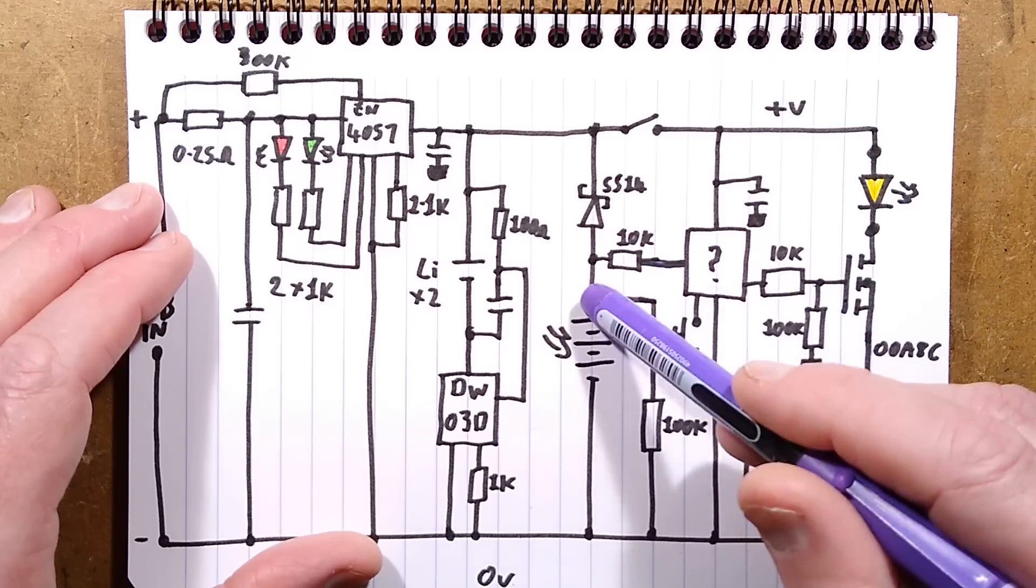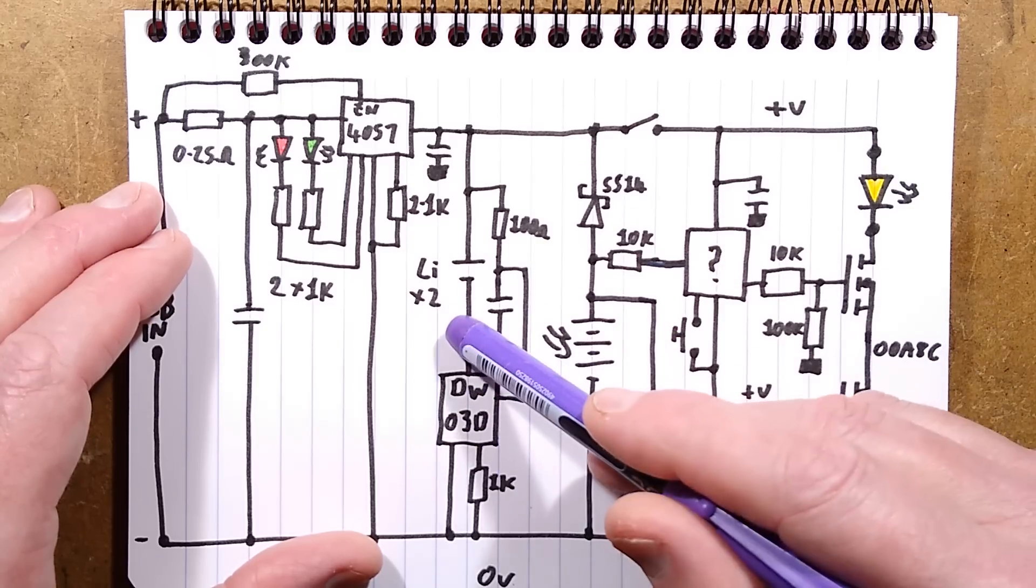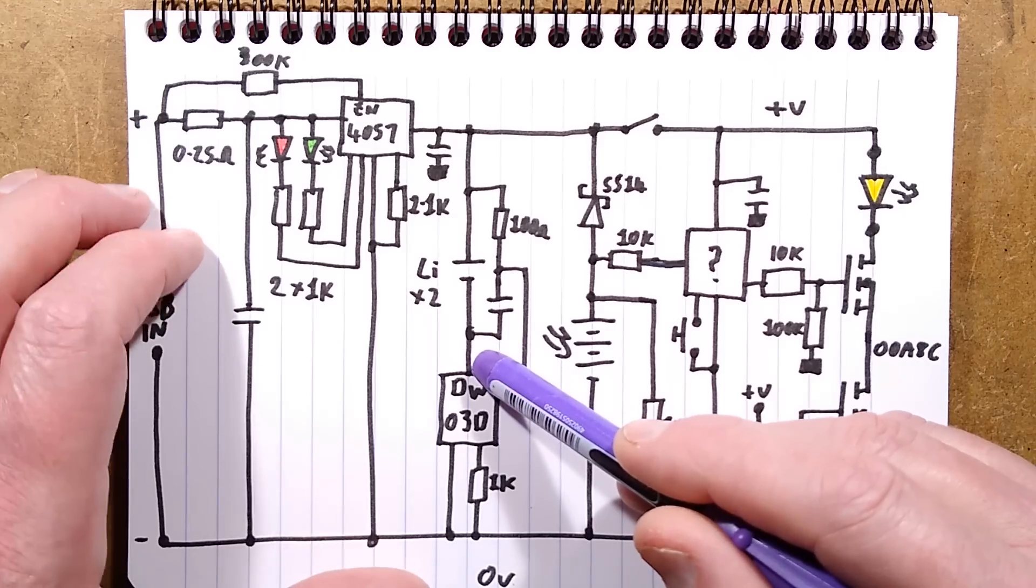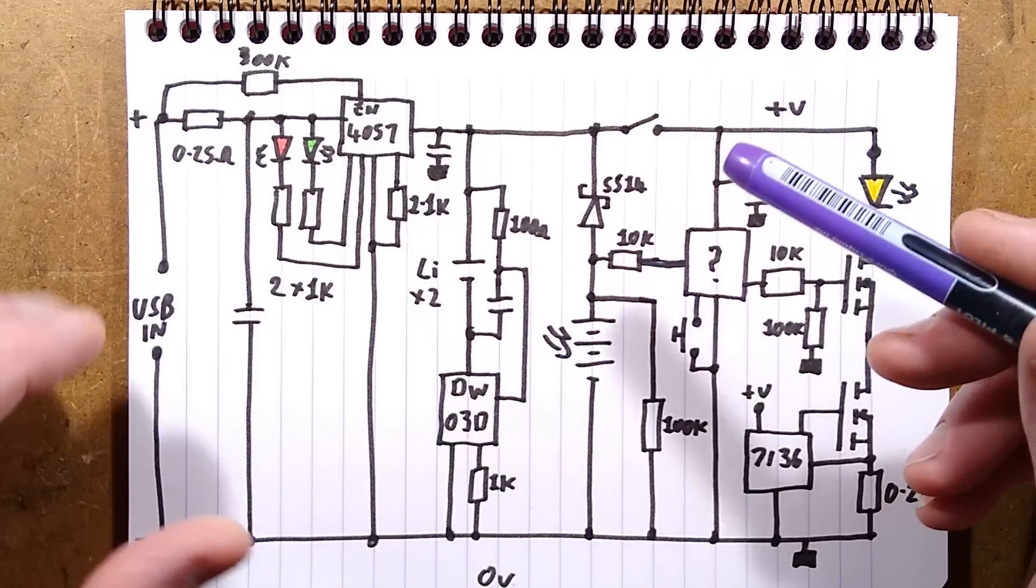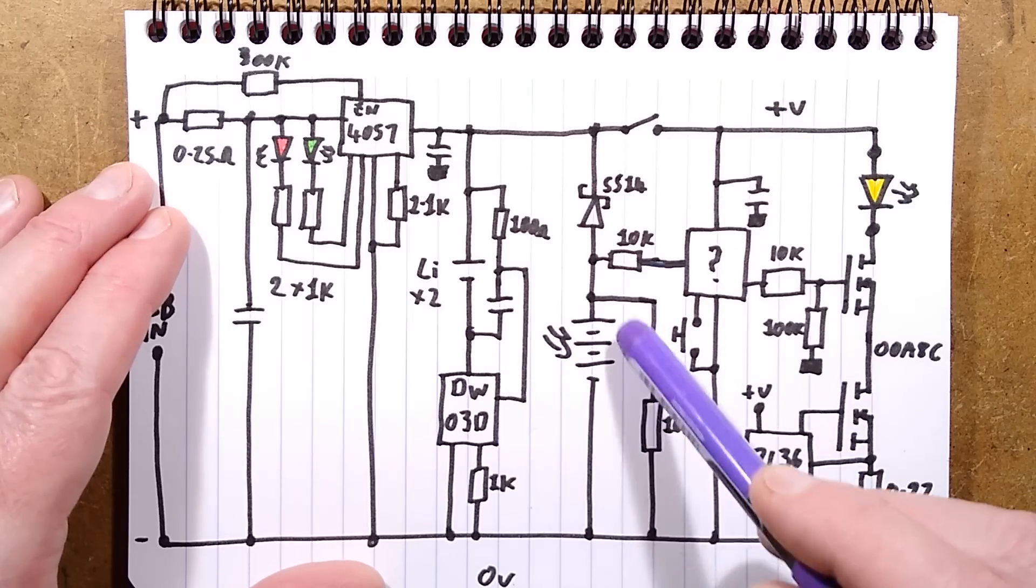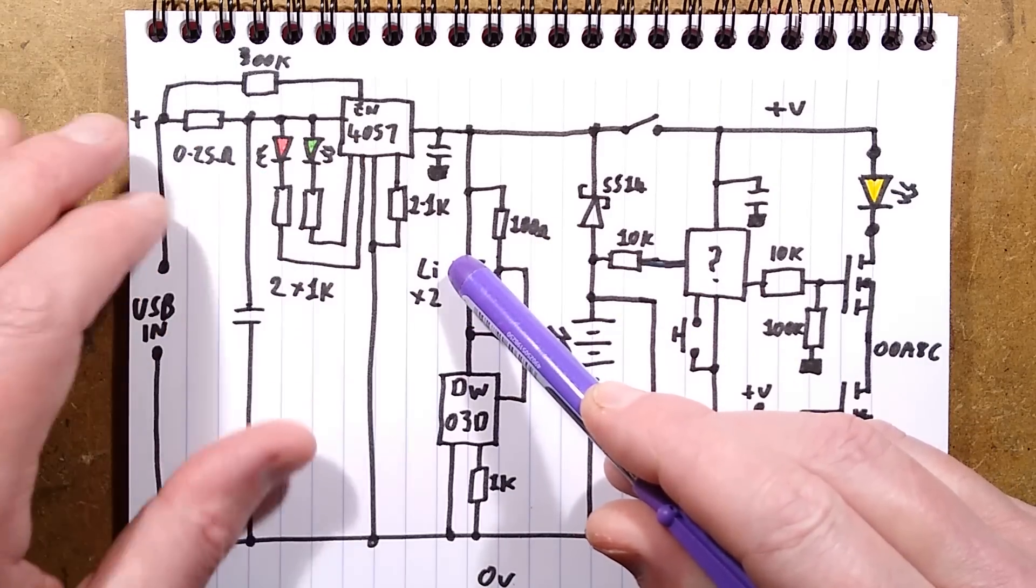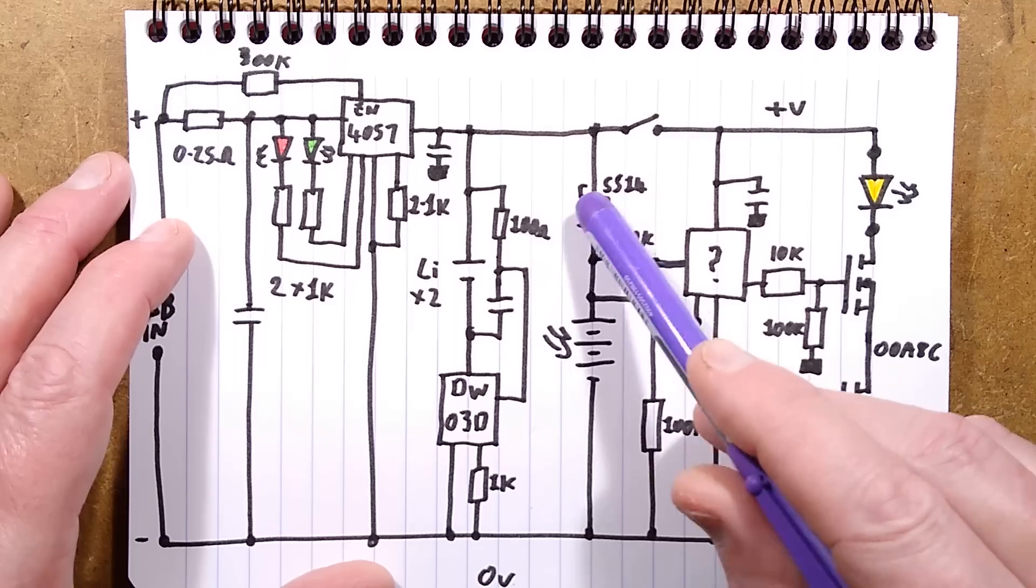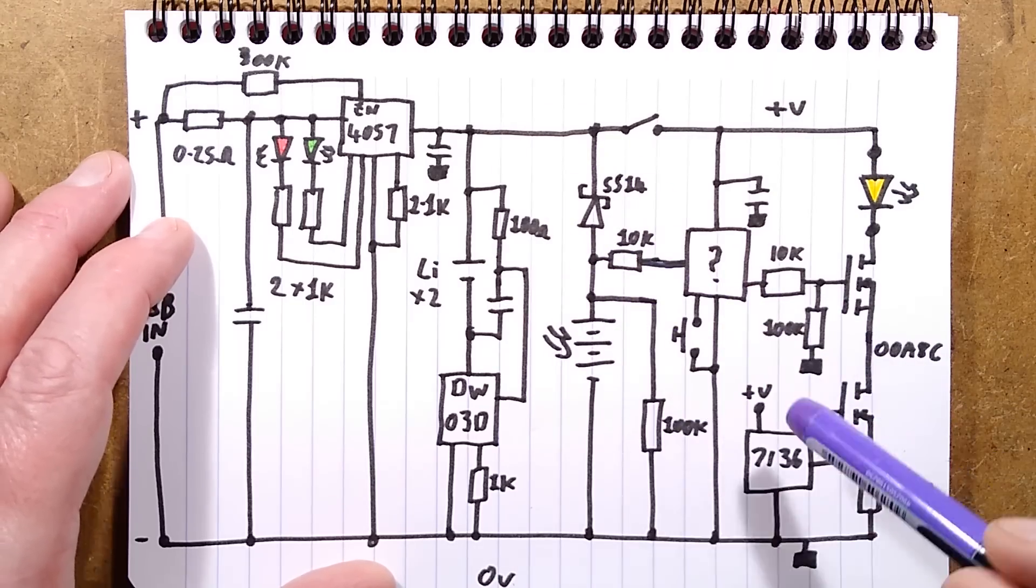The solar panel can theoretically charge that up until the DW03D kicks in, which is a bit above the normal charging voltage of a lithium cell, around about 4.25 volts usually. The solar panel charges the lithium cell as an alternative to the USB via this Schottky diode. The current limiting is purely what the solar panel can deliver.